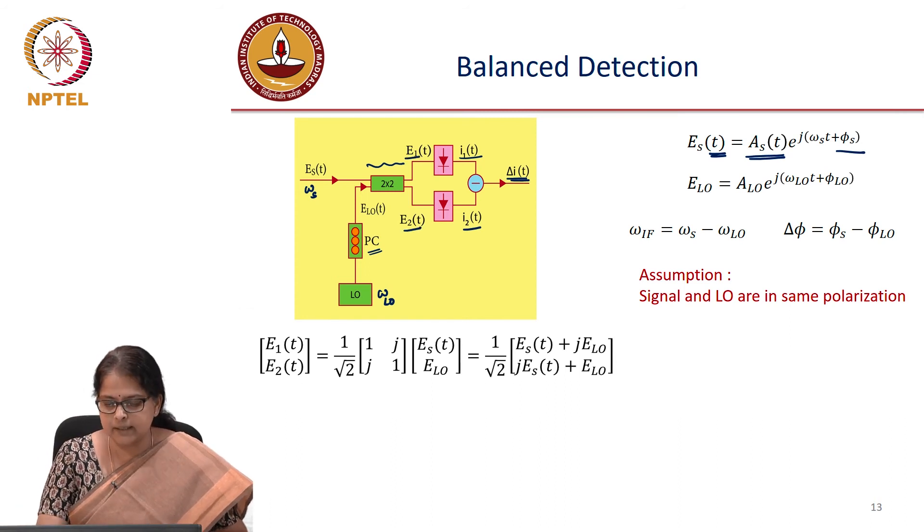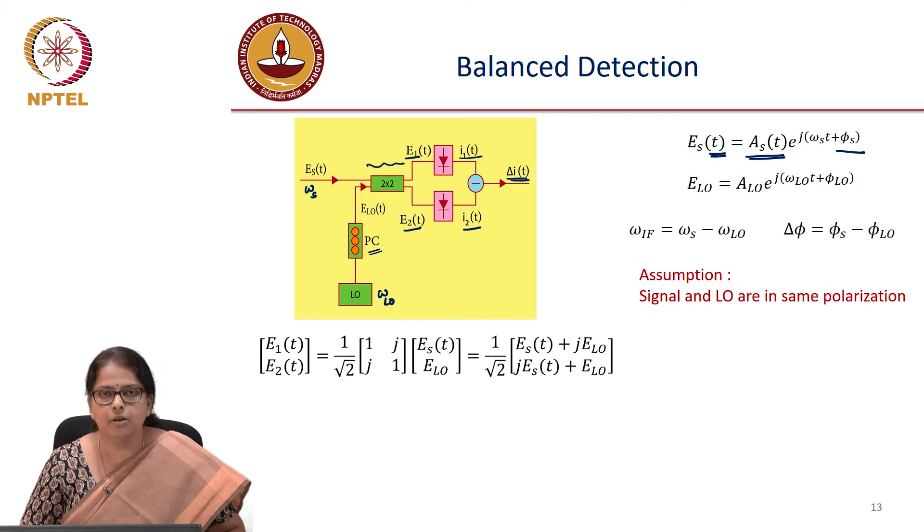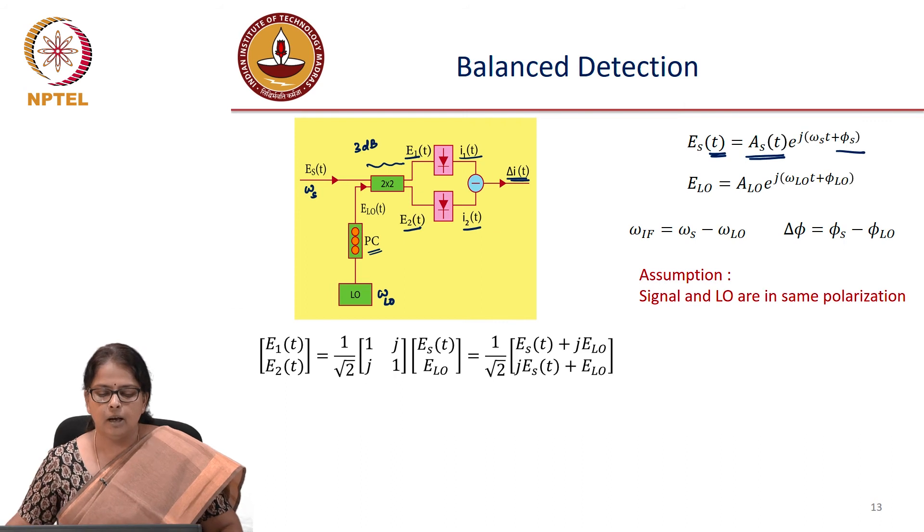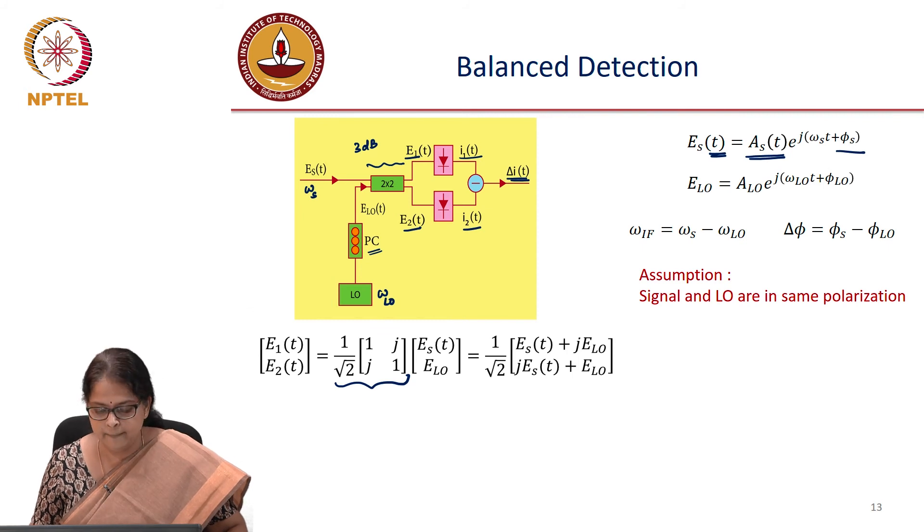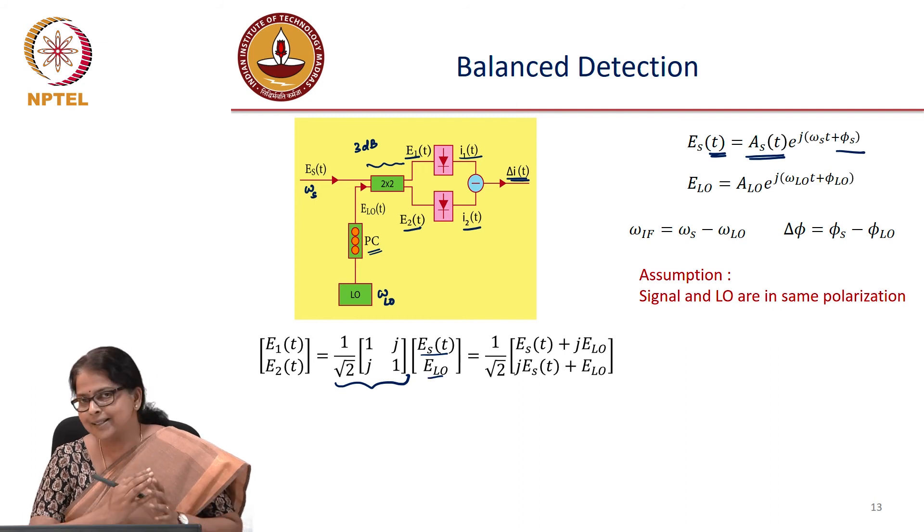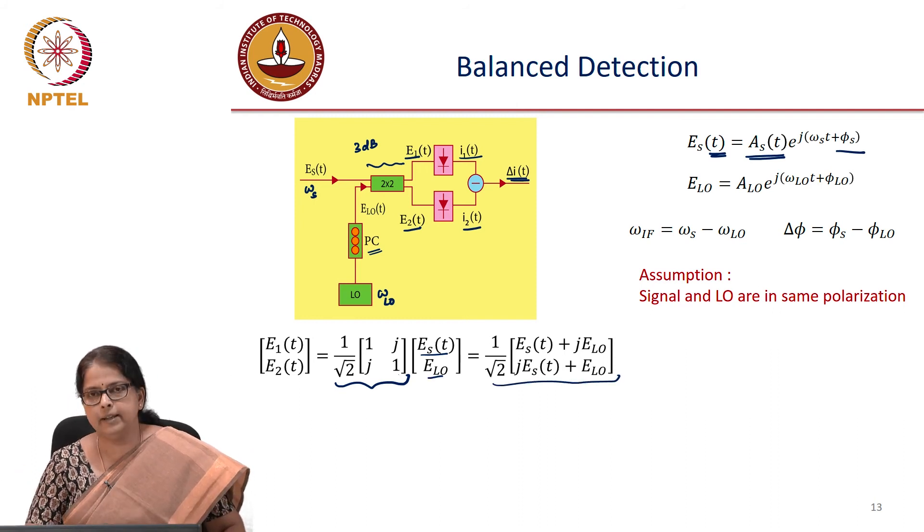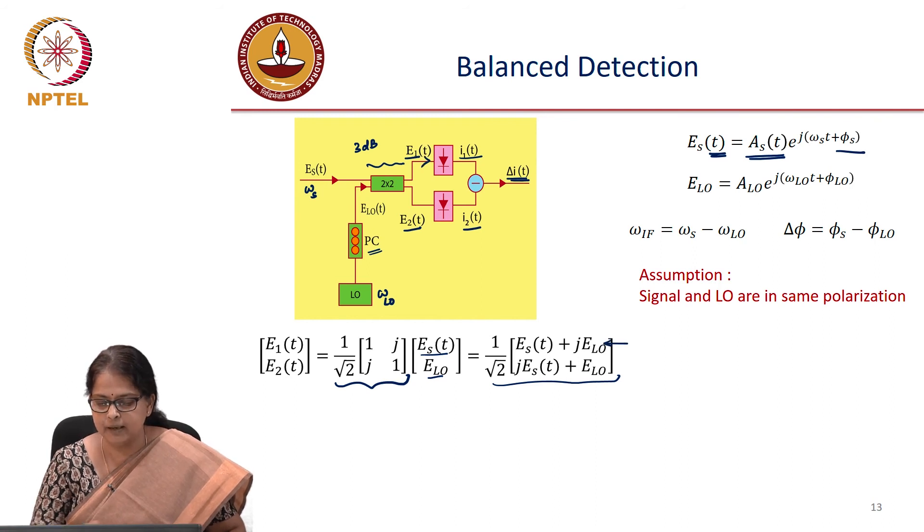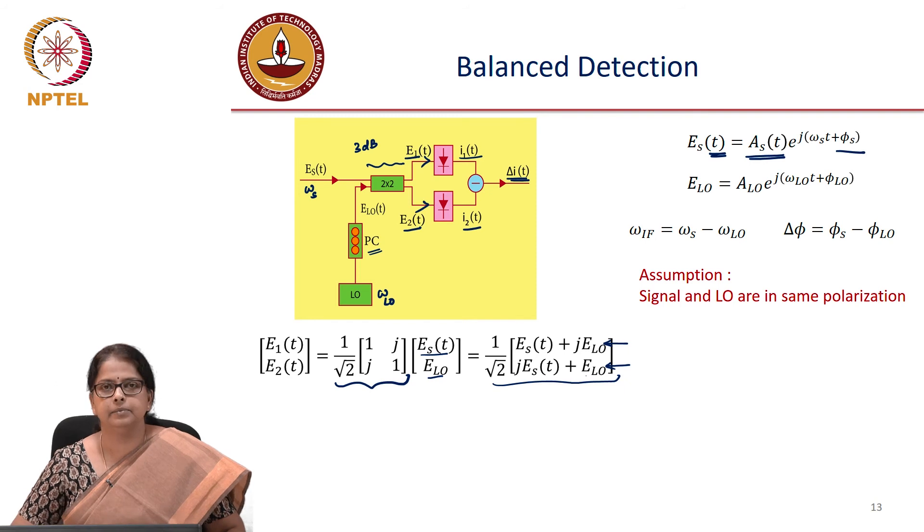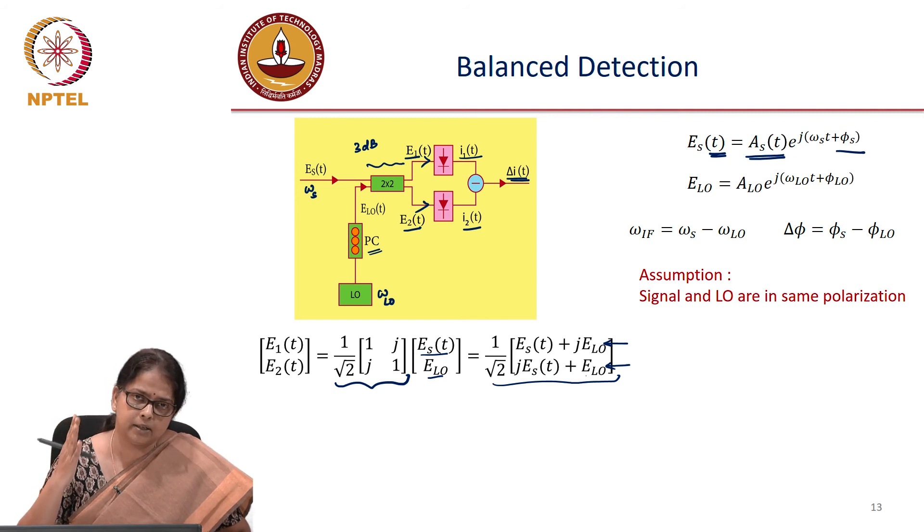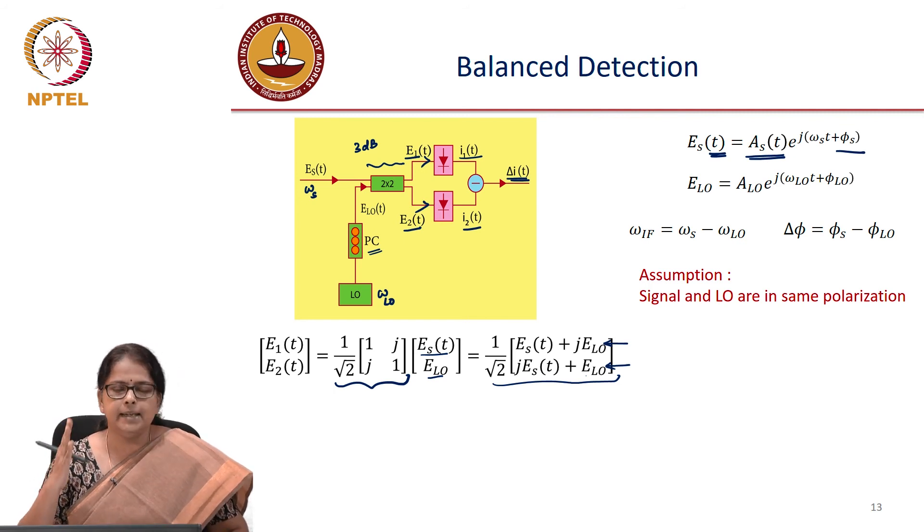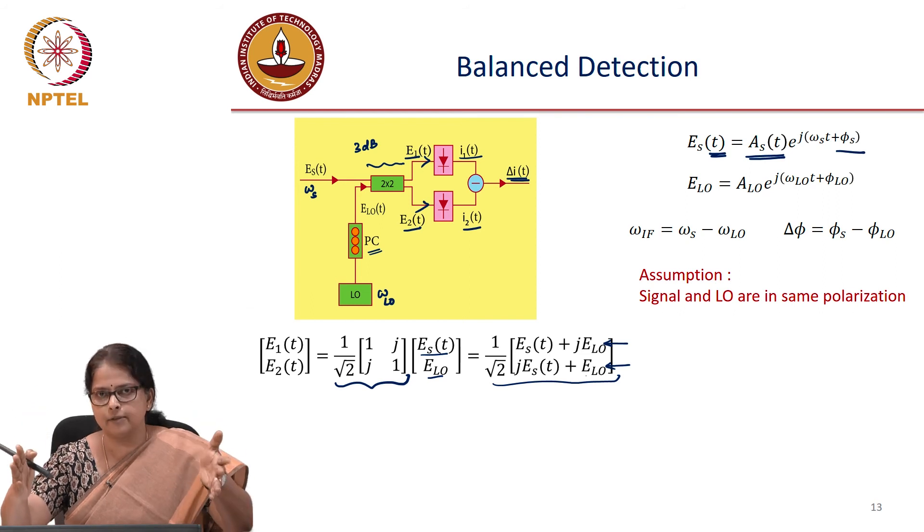Now the output of this coupler is, let us call it as E1 and E2. We now know the transfer function of this 2 by 2 coupler. Let us say this is a 3 dB coupler with a power split ratio 50-50. The transfer function of a 3 dB coupler is 1 j j 1 and the input to this is E_s, which is modulated and E_LO. So this is a simple matrix multiplication. You end up something like this. So this is what you get in the first arm E1 and this is the electric field in the second arm.